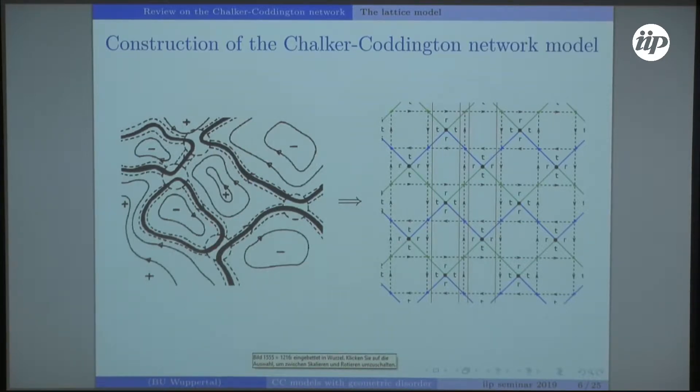Having a saddle point here, a transition might appear, and this in the network model is described by a vertex with a reflection coefficient for the case the electron stays on the same side and transmission for moving to the other side. This way we have two different vertices.